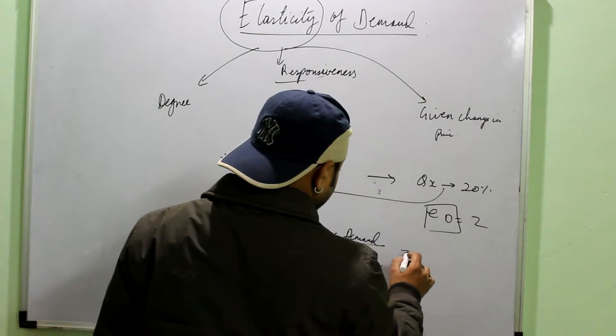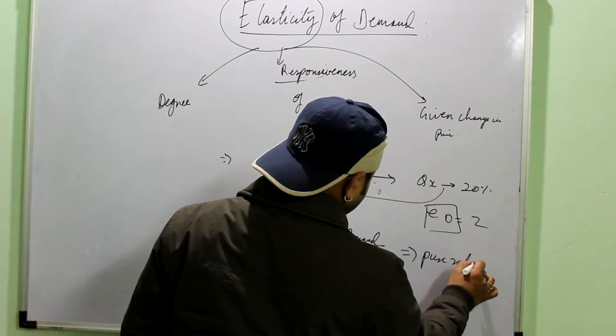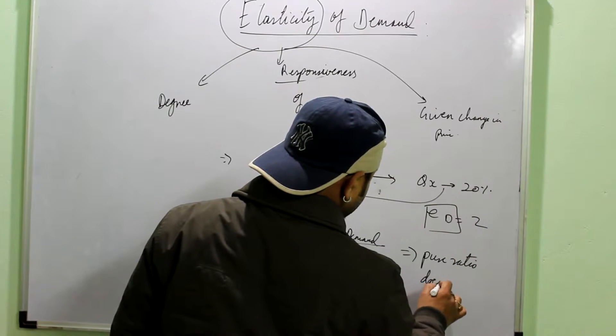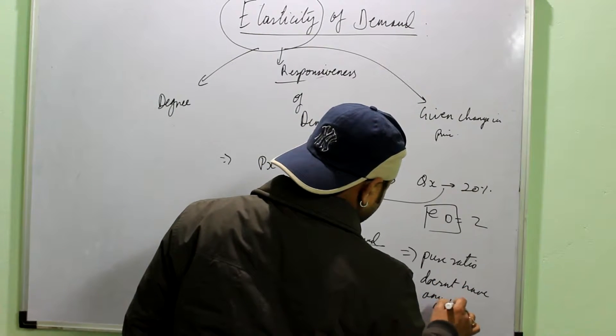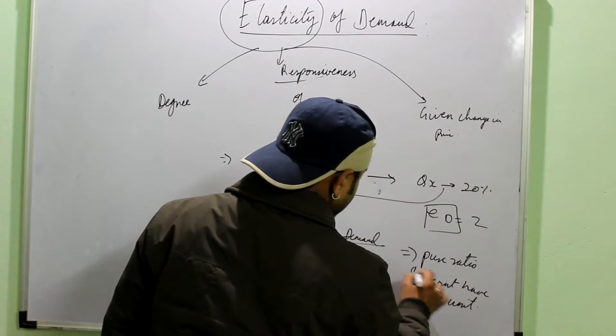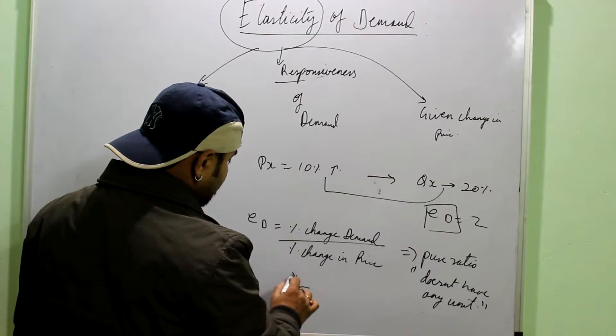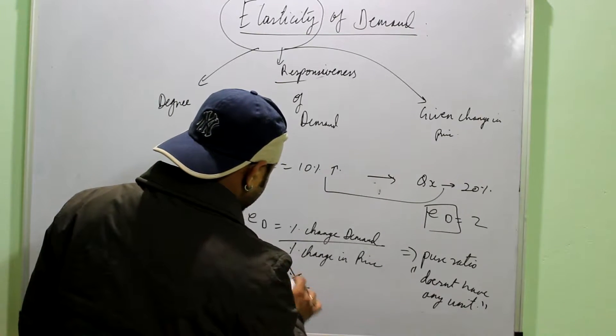And you have to remember that it is a pure ratio. It means it doesn't have any unit. Because percentage and percentage, when you divide them, then they get cancelled. So, no unit. Pure ratio.